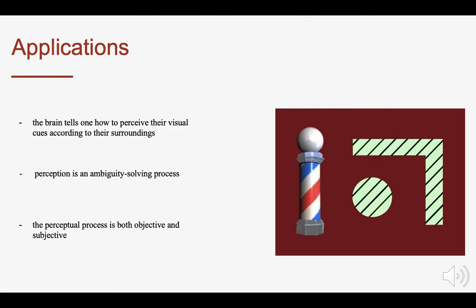Therefore, perception is inevitably an ambiguity-solving process. The perceptual system generally reaches the most plausible global interpretation of the retinal input by integrating local cues that are more objective, as demonstrated throughout this presentation, and psychological cues that are subjective to some extent as well.